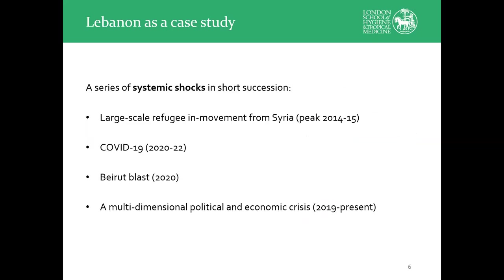Into this environment, a series of systemic shocks arose in quick succession with overlapping impacts. One of the really interesting features of Lebanon is a degree of interaction between the effects of different shocks over time. At the beginning of the project, the primary focus was the large-scale refugee movement, but over the course of the research we also had to account for the impact of COVID, the Beirut blast — a large explosion in summer 2020 that knocked out the national vaccine storage warehouse and destroyed clinics — and an ongoing, severe political and economic crisis.